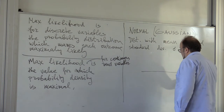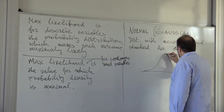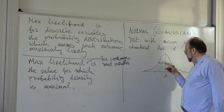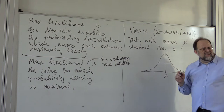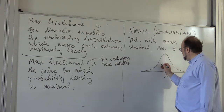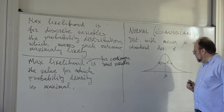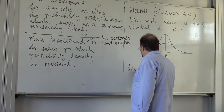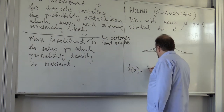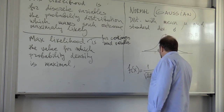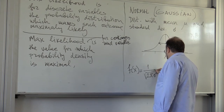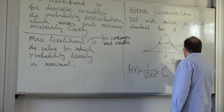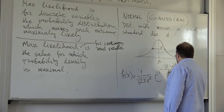Gaussian distribution with mean mu looks like this. This is mu, and the width in some sense is the standard deviation. The formula for the density is: f of x is 1 over square root of 2 pi sigma squared — which is the variance — times e to the minus x minus mu squared divided by 2 sigma squared.